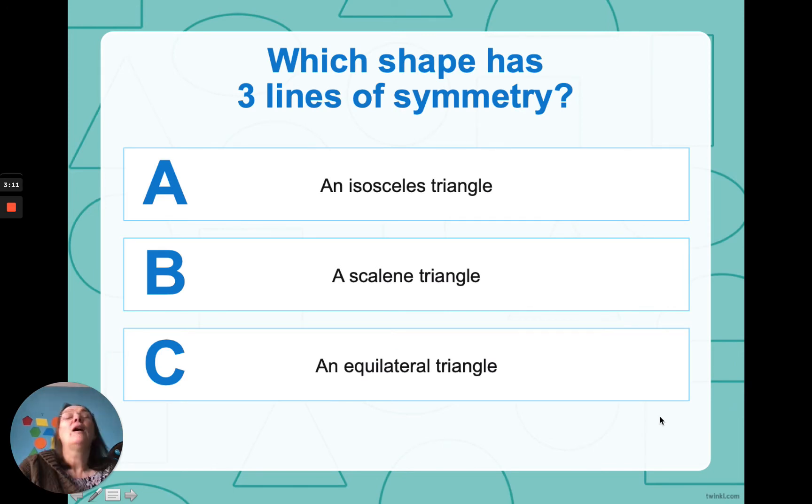So, which shape has three lines of symmetry? Now again, I haven't told you anything about an isosceles triangle yet. I haven't told you what a scalene triangle yet is. But I have told you about an equilateral triangle. Three sides exactly the same. And these equilateral triangles, if I drew a line straight down the middle, that would be a line of symmetry. If I take a line from the corner, or that corner, it's an equilateral triangle.